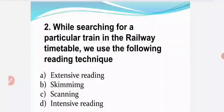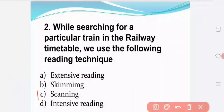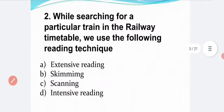While searching for a particular train in the railway timetable, we use the following reading technique. Option A — extensive reading. Option B — skimming. Option C — scanning. Option D — intensive reading. The correct answer is Option C: scanning.